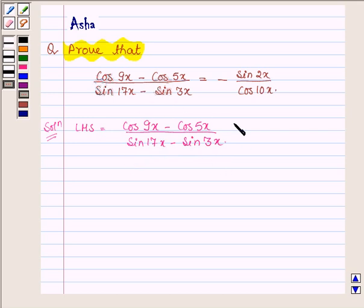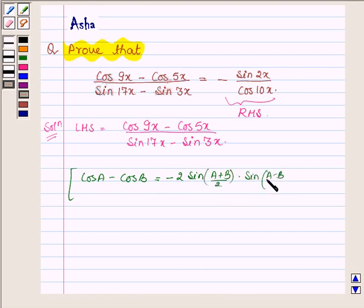I will simplify it and show that it is equal to the right hand side. Now as we know, cos A minus cos B is equal to minus 2 sin A plus B upon 2 into sin A minus B upon 2, and sin A minus sin B is equal to 2 sin A minus B upon 2 into cos A plus B upon 2.